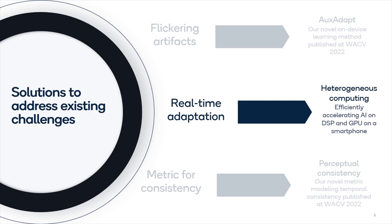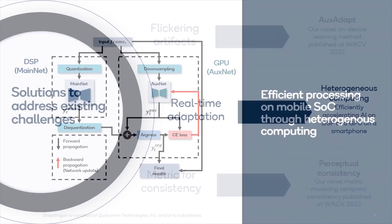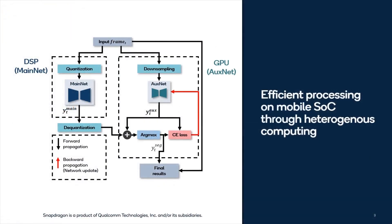To enable real-time adaptation on a smartphone, we utilize heterogeneous computing on Snapdragon processors to distribute AI tasks to the DSP and GPU, efficiently accelerating AI computations.